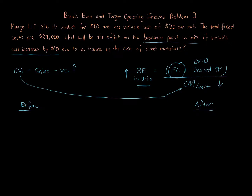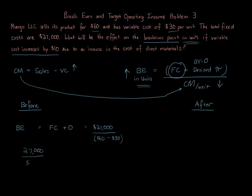Starting with the before calculation using the numbers given: Mango sells for $60 and has variable costs of $30 per unit, with total fixed costs of $27,000. Break-even in units equals fixed costs plus zero, so $27,000, divided by the contribution margin per unit: $60 minus $30 equals $30. That gives us $27,000 over $30 per unit, which equals 900 units to break even.